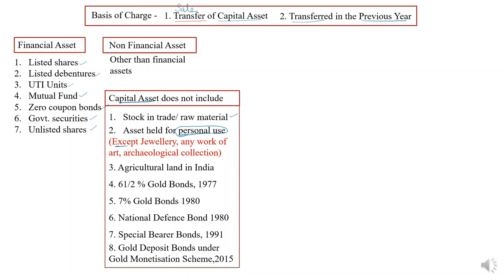What are those assets? The first one is jewellery — jewellery includes ornaments. Even though it is a personal asset, the sale will be treated as capital asset. Then any work of art, for example a painting — if I have a costly painting and sell it, even though it is used at my home, that will be treated as a capital asset. Then archaeological collections. So all three — jewellery, any piece of art, archaeological collections — even though they are personal assets, they will be treated as capital assets and the sale will be charged under the head capital gain.